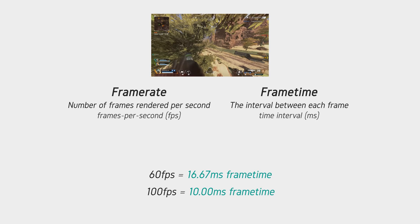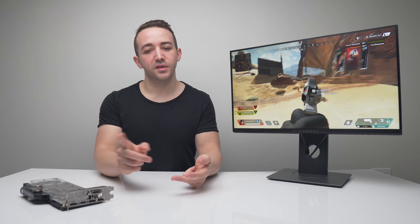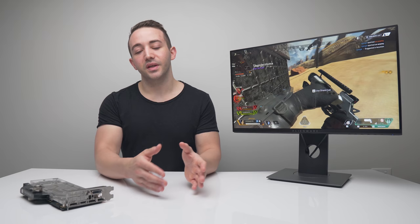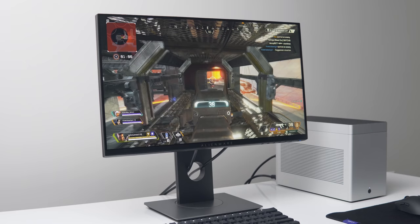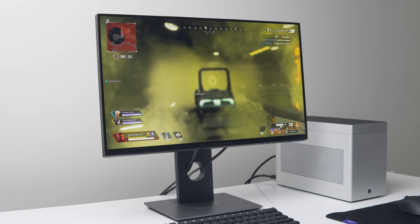As humans, we don't compute how many frames we're getting per second. We can just evaluate overall smoothness based on the interval between each frame - meaning frame times. To evaluate smoothness in an image, we really should be talking about frame times, not frame rates. One reason is that as frame times decrease approaching say three or four milliseconds, the corresponding frame rate can actually be quite misleading.